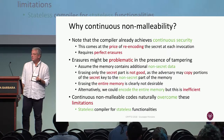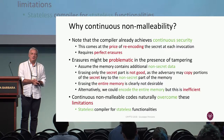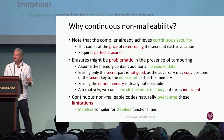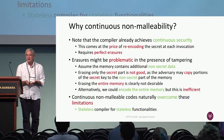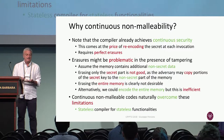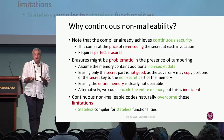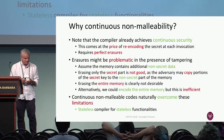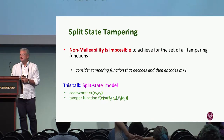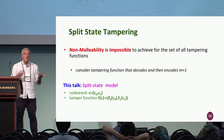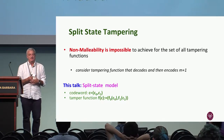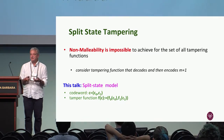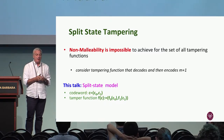Why continuous non-malleability? You could achieve it from one-time non-malleability at the price of re-encoding and perfectly erasing, but erasing is very hard to achieve in physics. So instead we encode this security notion directly in our primitive. This is an example also shown in the previous talk: non-malleability in general is impossible if we allow the adversary to do anything, because it could decode — since it's a keyless primitive — and encode M plus one, winning the game.